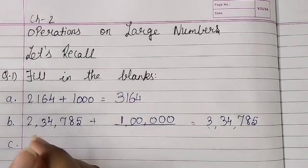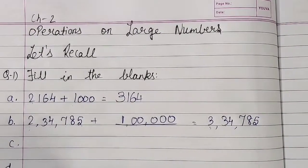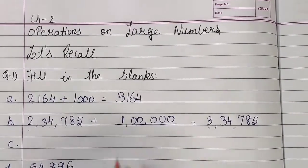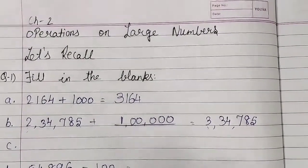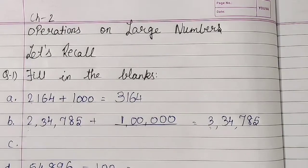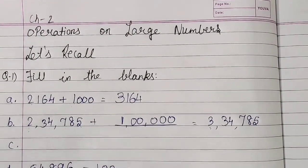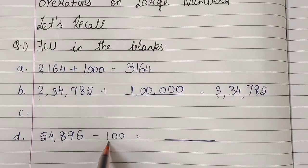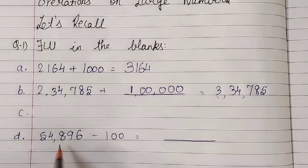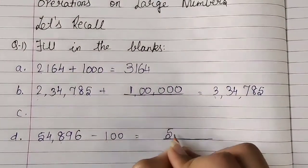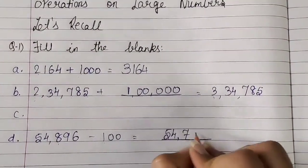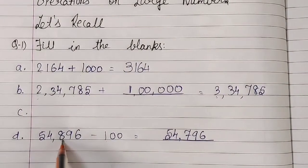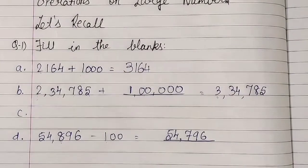Number (c) you have to try yourself. Now comes number (d): 54,896 minus 100. We only need to subtract 100. So we look at the hundreds place: it is 8. We subtract 1 from 8 to get 7. The remaining digits stay the same. So our answer is 54,796.